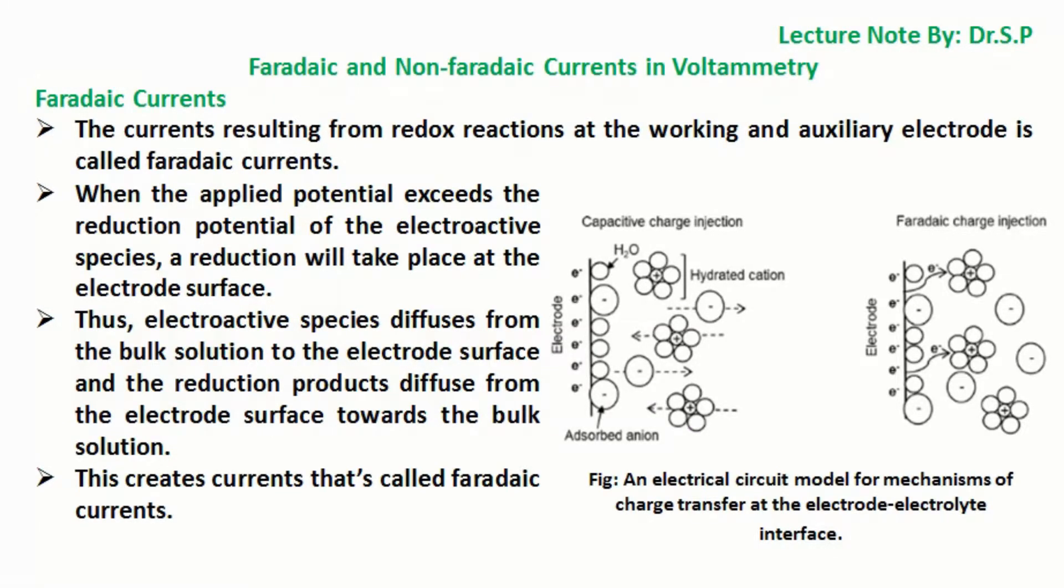Thus, electroactive species diffuse from the bulk solution to the electrode surface, and the reduction products diffuse from the electrode surface towards the bulk solution. This creates currents called faradaic currents.